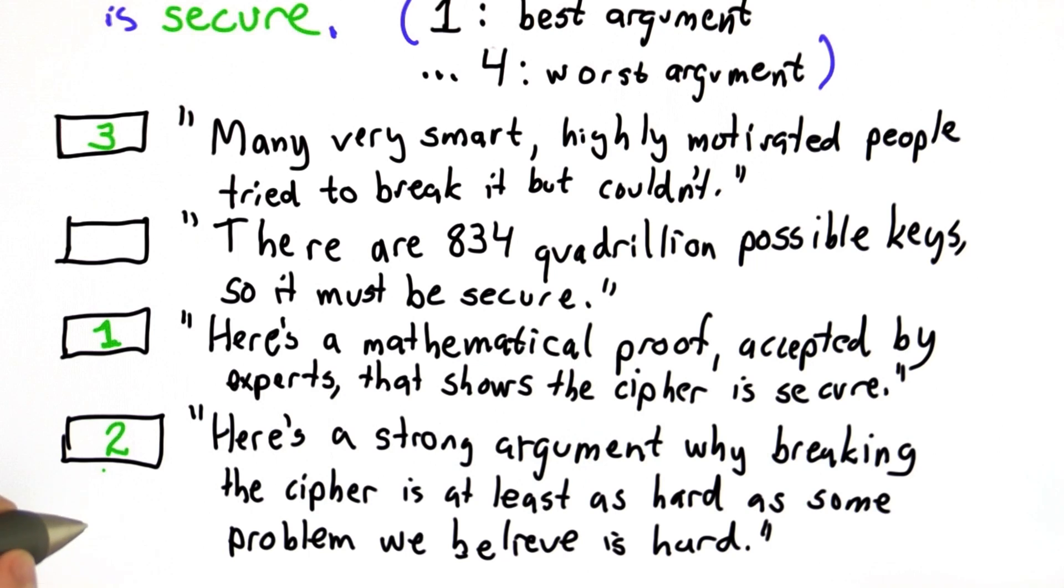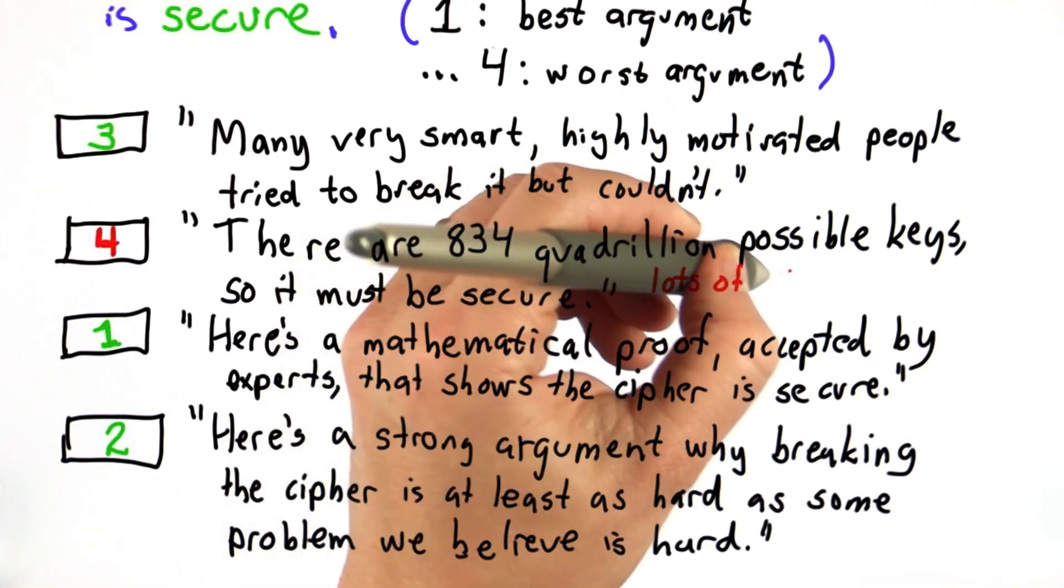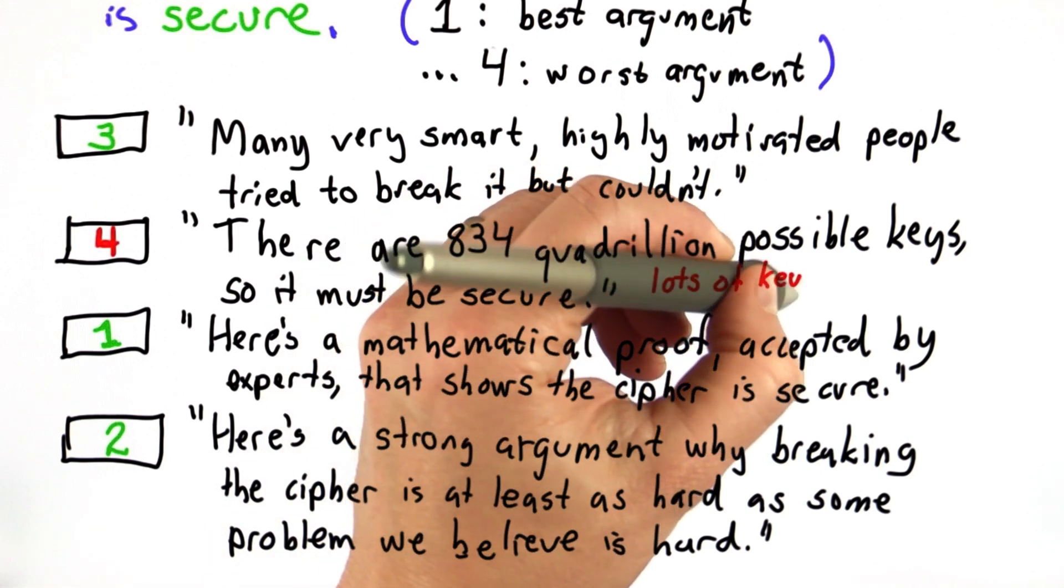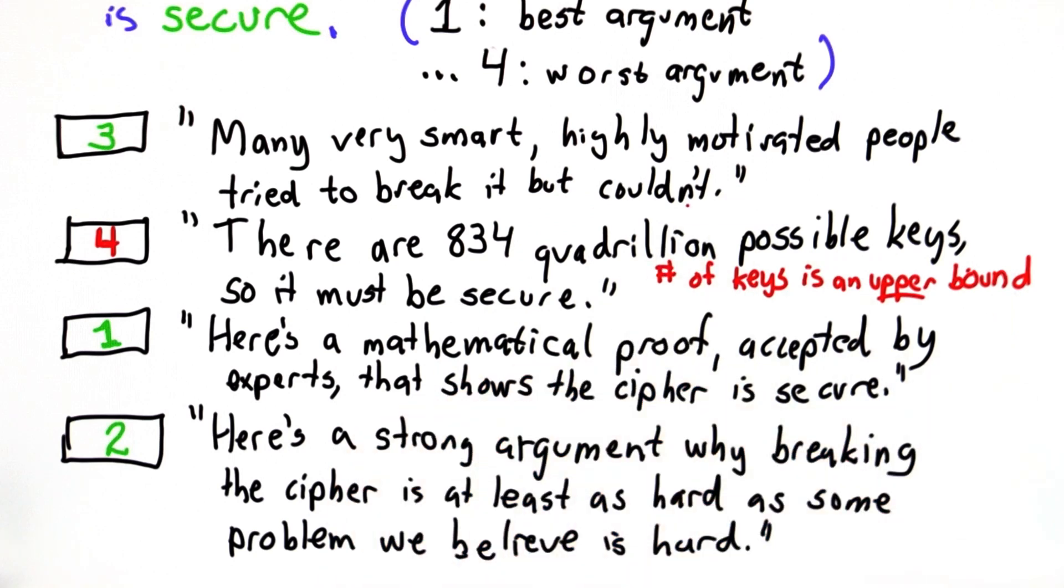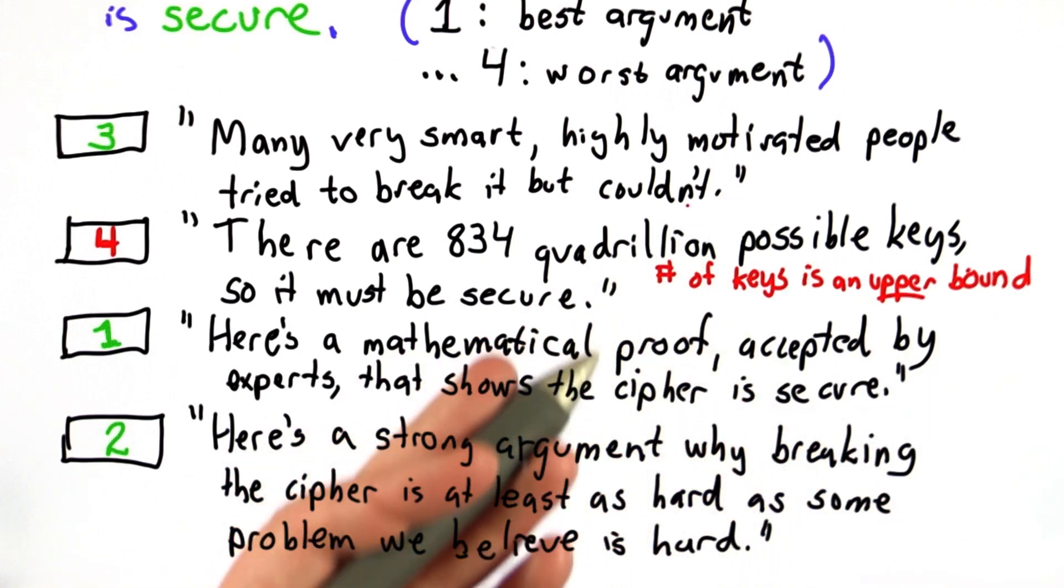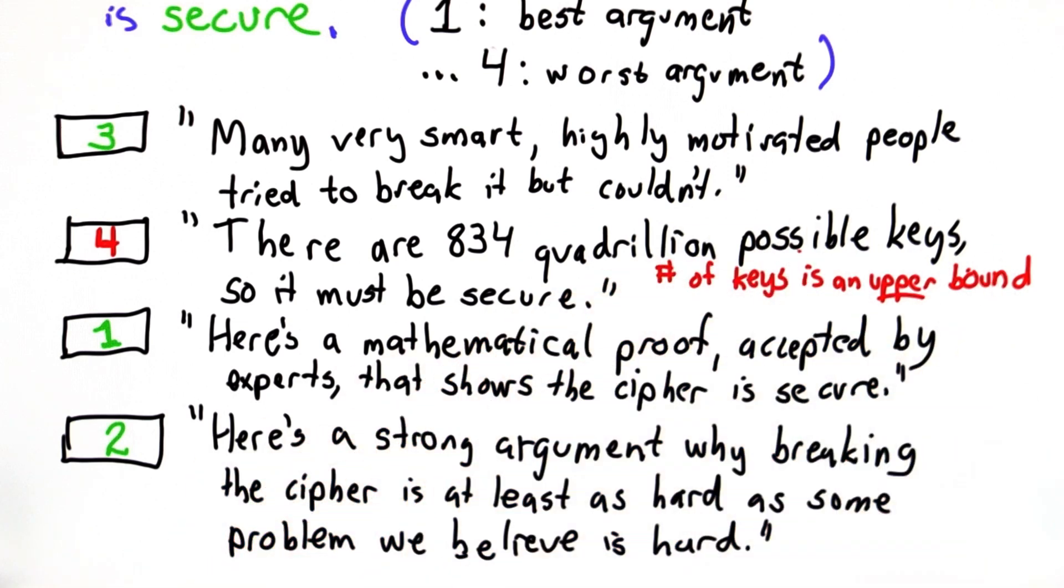The worst possible argument here is the key space argument, and this one is often made incorrectly. The number of keys gives you an upper bound on the difficulty to break the cipher because at worst the attacker could try all the keys.